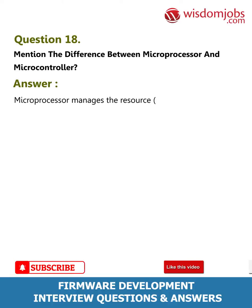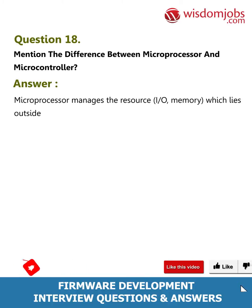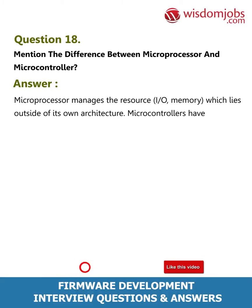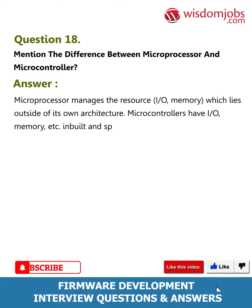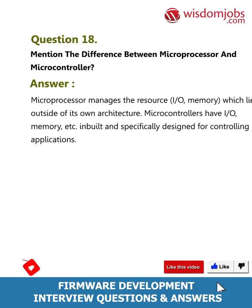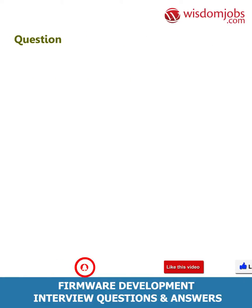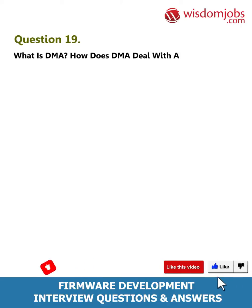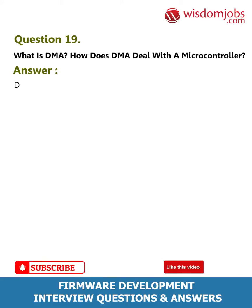Question 18: Mention the difference between microprocessor and microcontroller. Answer: A microprocessor manages resources such as I/O and memory which lie outside of its own architecture. Microcontrollers have I/O, memory, etc. inbuilt and are specifically designed for controlling applications.